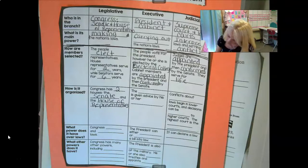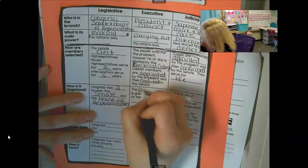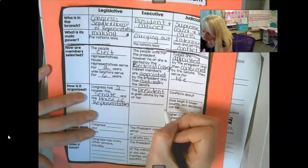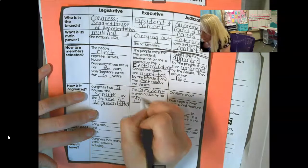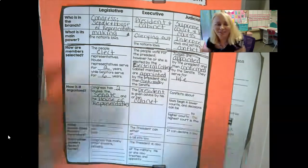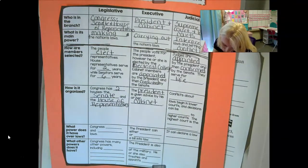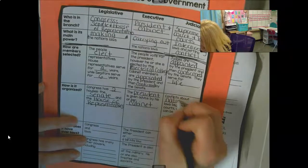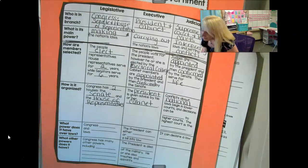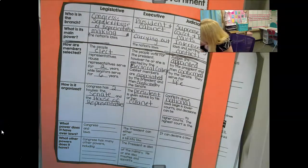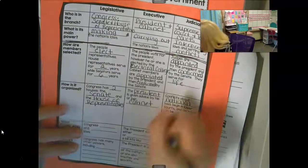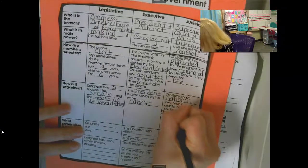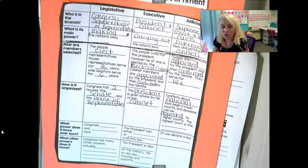The president, moving on to the executive branch, is given advice by his or her cabinet. Conflicts about national laws begin in lower court, and decisions can be appealed. This is very complicated stuff that I don't want to get too far into.